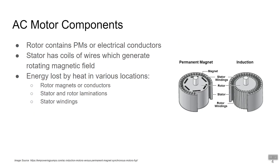The AC motor is comprised of a spinning rotor that contains either permanent magnets or electrical conductors. The stator has coils of wires which generate a rotating magnetic field. This applies a rotating torque on the rotor, and the energy is lost by heat during operation of the motor in various locations.